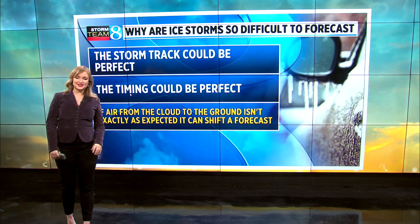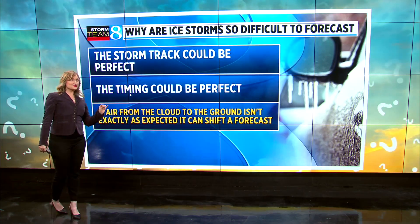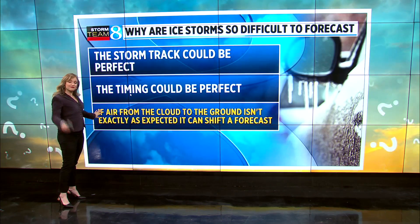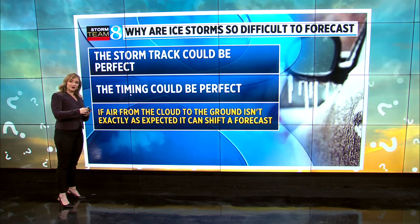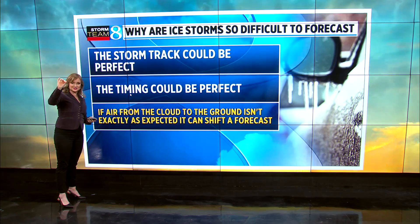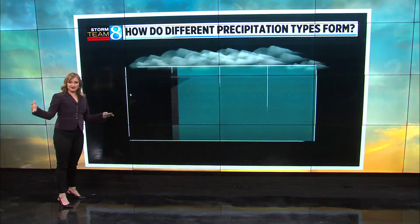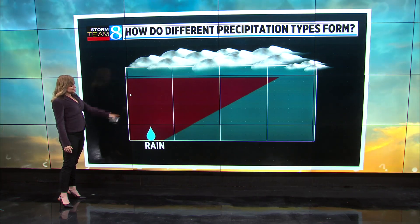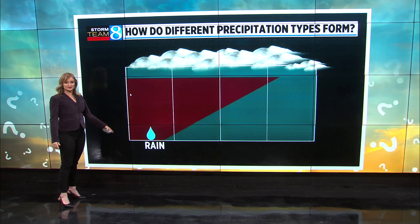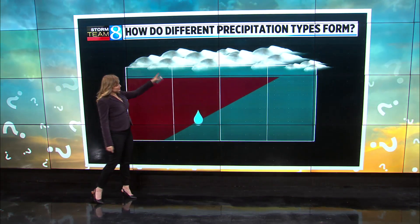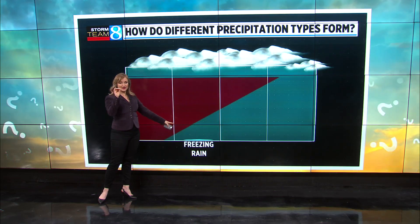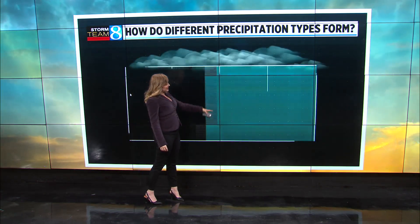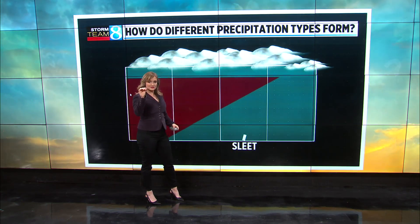Now for a few more details. Even with the most convincing ice storms, the forecast track and timing could be perfect, but if on the way from the cloud to the ground our raindrop does not encounter the right conditions in that shallow layer of air, it can ruin everything. If a raindrop falls through just warm air, it makes it to the ground as rain. Freezing rain occurs when a raindrop encounters a really shallow area of cold air — it flash freezes at the surface. But if it encounters too much cold air, it turns into an ice crystal or sleet.